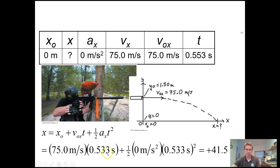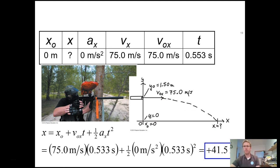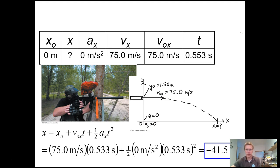Plugging and chugging using the first equation of motion, we find that the paintball lands 41.5 meters away. Since it landed all the way to the ground, that means you missed your target — apparently bad aim — but you know how far away it landed: 41.5 meters. Sound good?